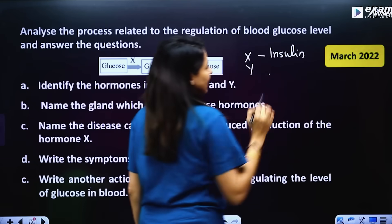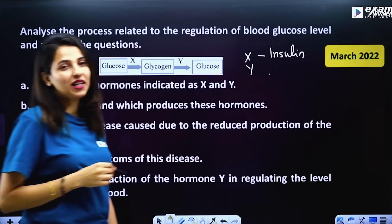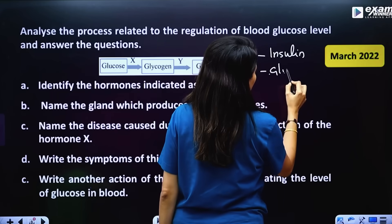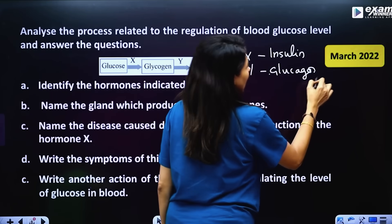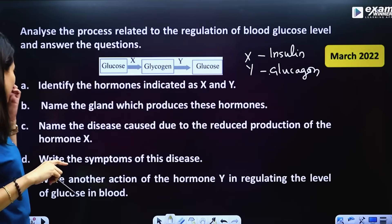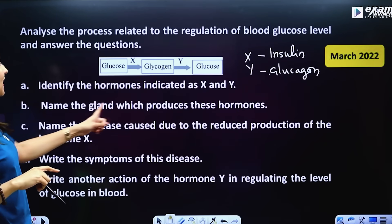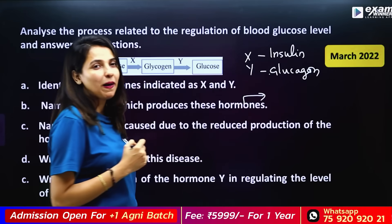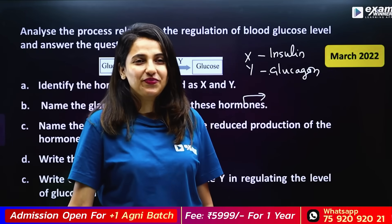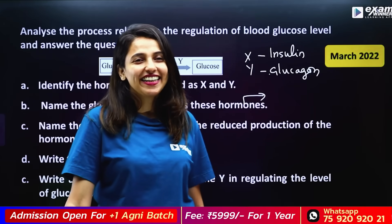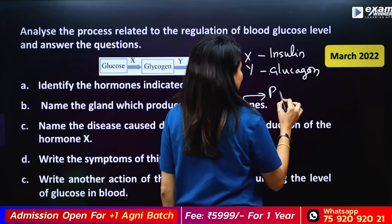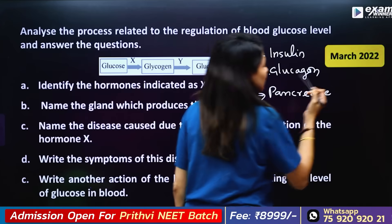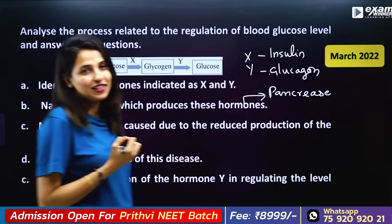Then glycogen converts back to glucose — that is hormone Y, which is Glucagon. Name the gland which produces these hormones. The gland is the Pancreas. In the pancreas, we have beta cells and alpha cells.